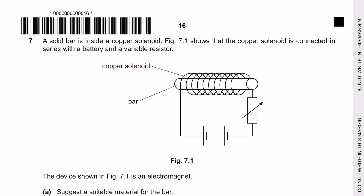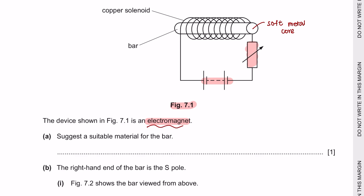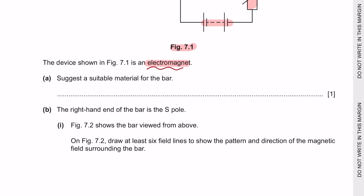Next question 7: A solid bar is inside a copper solenoid. Figure 7.1 shows that the copper solenoid is connected in series with the battery and a variable resistor. The device shown in figure 7.1 is an electromagnet. Remember that a simple electromagnet is made by coiling wire around a soft metal core. Question A: Suggest a suitable material for the bar. A suitable material would be soft iron, as it is a temporary magnet and it can lose magnetism easily.